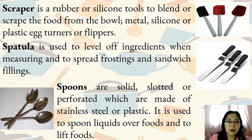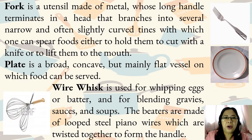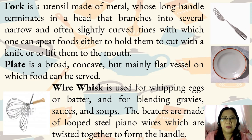Metal, silicone, or plastic egg turners or flippers. Spatula is used to level off ingredients when measuring and to spread frostings and sandwich fillings. Spoons are solid, slotted, or perforated, made of stainless steel or plastic. They are used to spoon liquids over foods and to lift foods. Fork is a utensil made of metal whose long handle terminates in a head that branches into several narrow and often slightly curved tines, with which one can spear foods to hold them while cutting or to lift them to the mouth.